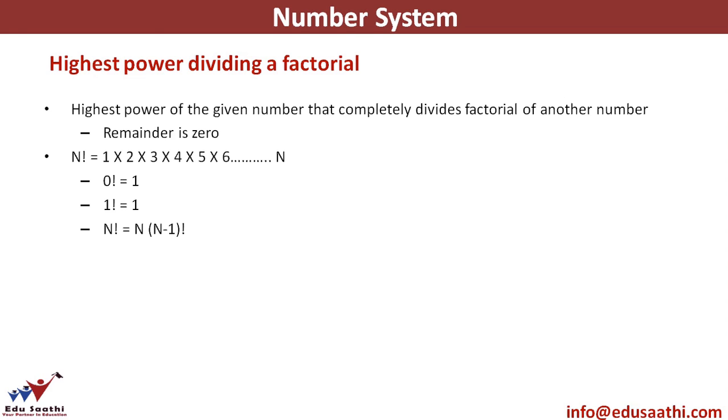But first let's look at what does a factorial mean. Factorial of any number means multiplying all the consecutive natural numbers starting from 1 to the number itself. So if I have to find 8 factorial, I will start from 1. I will keep on multiplying all the consecutive natural numbers till that number. The things that I need to look at is 0 factorial, the value is 1. 1 factorial, the value is also 1. And n factorial can be written as n into n minus 1 factorial.